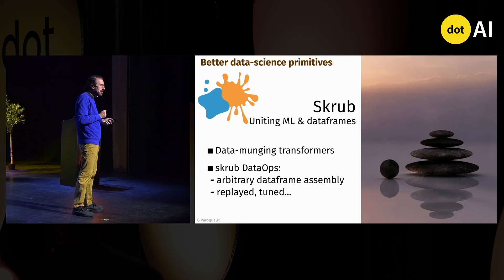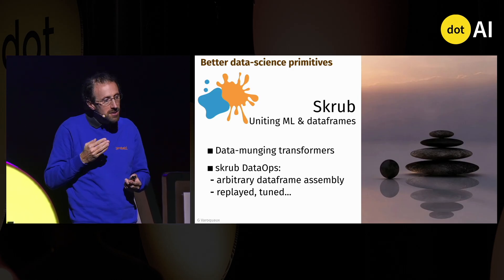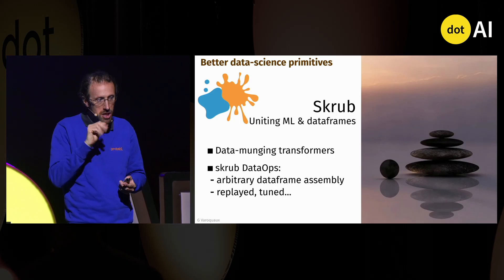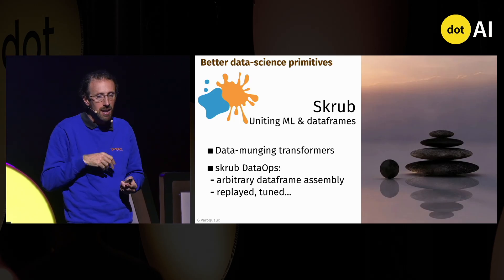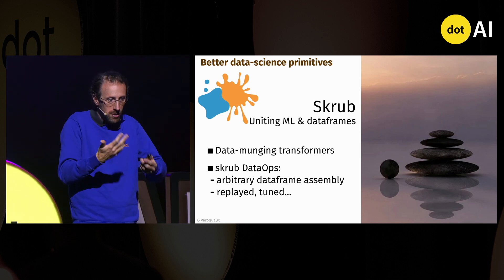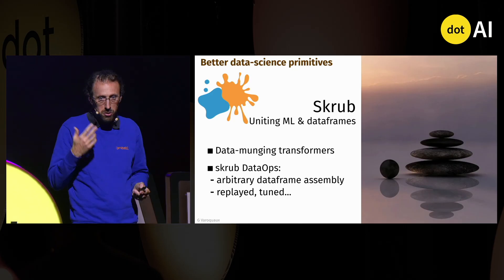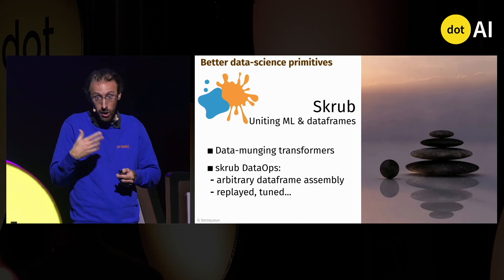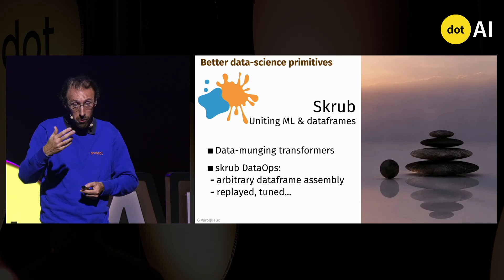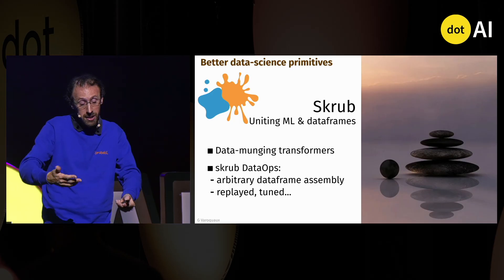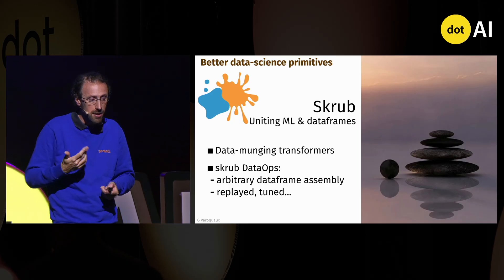Skrub gives us better data science primitives. It unites the world of machine learning and the world of dataframes. It gives us transformers for data munging that separate fit and transform, and DataOps that can work with arbitrary data assembly — including Polars, IBIS, and DuckDB. It just wraps what is done, but it can replay it and tune it.